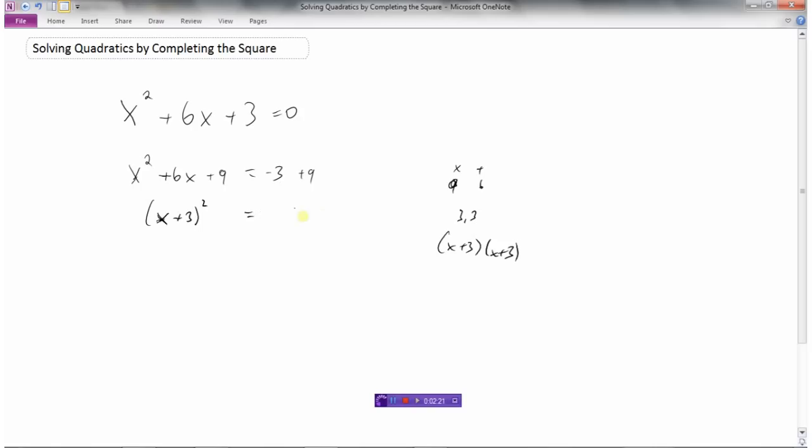And on the right side, negative 3 plus 9 is 6. So I've got a perfect square trinomial here. x plus 3 squared equals 6. And now I can isolate x by taking the square root.